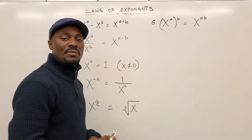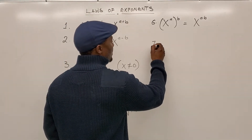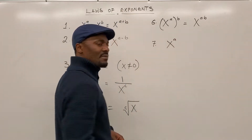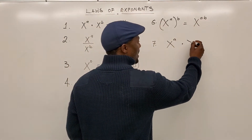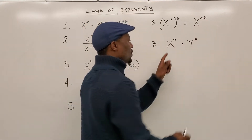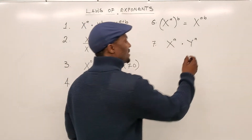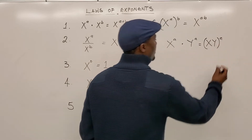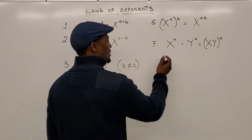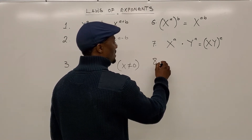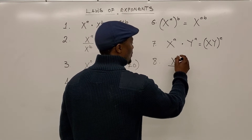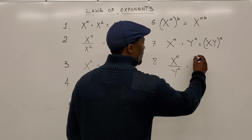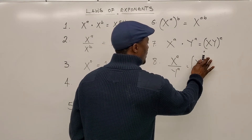Number seven: x to the power of a multiplied by y to the power of a — different bases, same exponent — the rule says multiply them and retain the exponent. And then the last one, number eight, is the division form: x to the power of a divided by y to the power of a — you generate a fraction and retain the exponent.